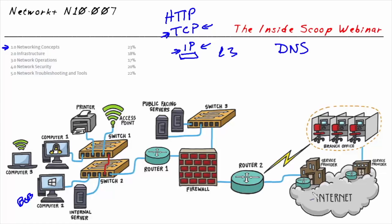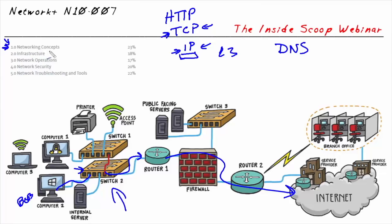As Bob's traffic was being forwarded out in the direction of the internet, it went into a device called a Layer 2 switch. The Layer 2 switch did forwarding based on Layer 2 MAC addresses, sometimes called physical addresses, until those frames were forwarded over to the default router — the default gateway — which continued to forward it toward the server Bob was trying to reach. Here on Bob's local network, we have the concept of Layer 2 switching, VLANs, and trunking, and all those fall in the category of networking concepts.